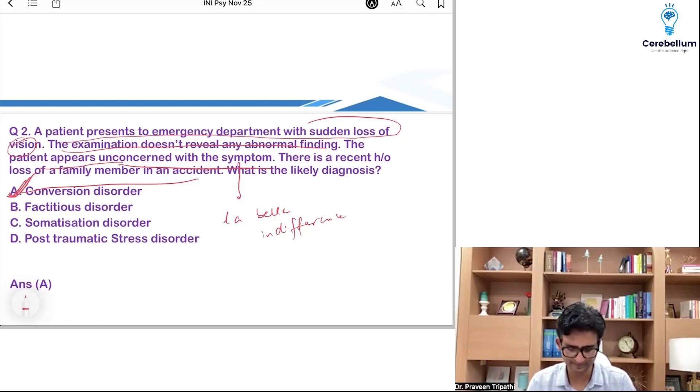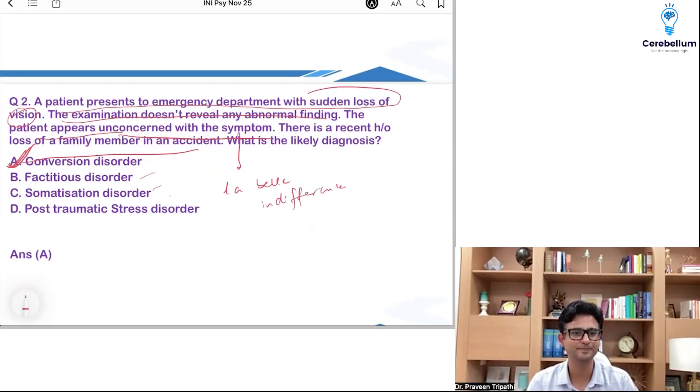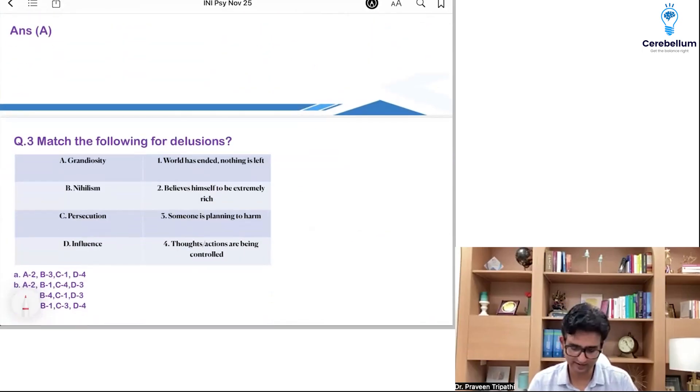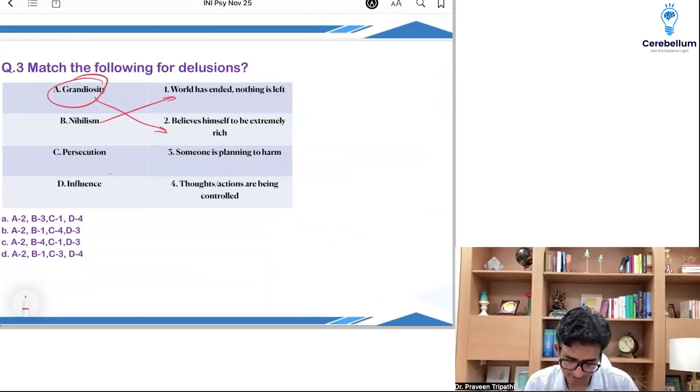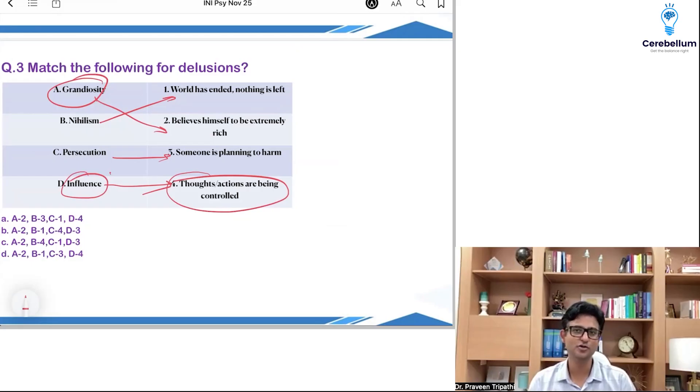These two are pretty straightforward questions. Detail may be with other options. We will release the explanations, the videos but this is recall where we are trying to wrap it up quickly. Again, third question, pretty standard, right? Grandiosity is about believing himself to be very rich. Nihilism, world has ended, the Cotard syndrome. Persecution, someone is planning to harm. And delusion of influence, thought, actions are being controlled. Interestingly, a question on delusion of influence was asked by FMG examiners last year. And now, they have given this term influence in the INICT exam. Earlier, they used to use the word control or passivity phenomena. This term influence was used by FMG examiners and now in the INICT.